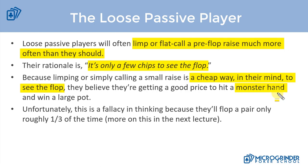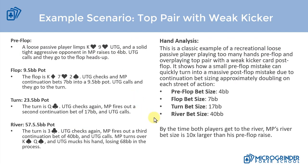In regards to flopping a pair, you're only going to flop a pair roughly one-third of the time. When talking about flopping better hands, the odds go down drastically. We'll look at common flop odds in the next lecture, but understand that if flopping one pair only happens one-third of the time, flopping something better than that happens even less often. The biggest issue is they're not going to flop a decent hand that often — they'll either flop a draw or nothing at all.